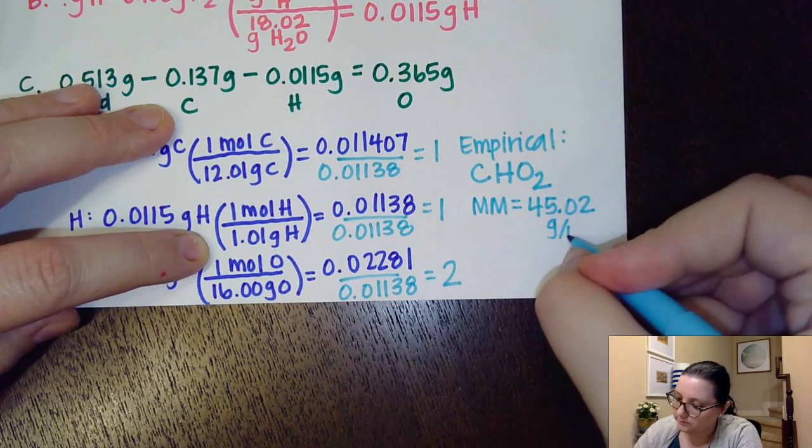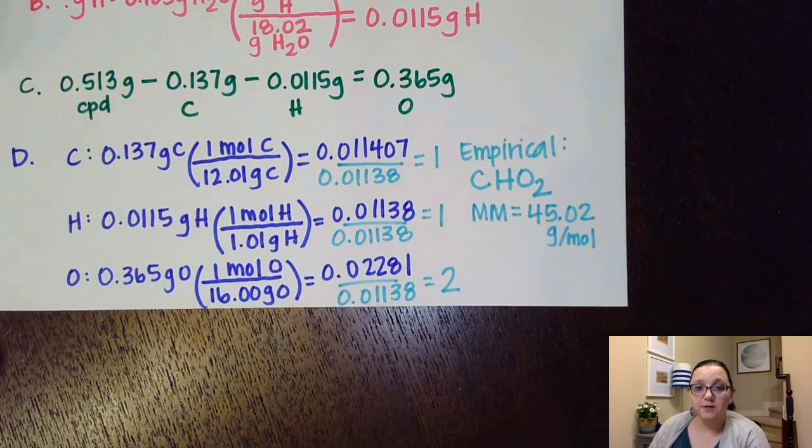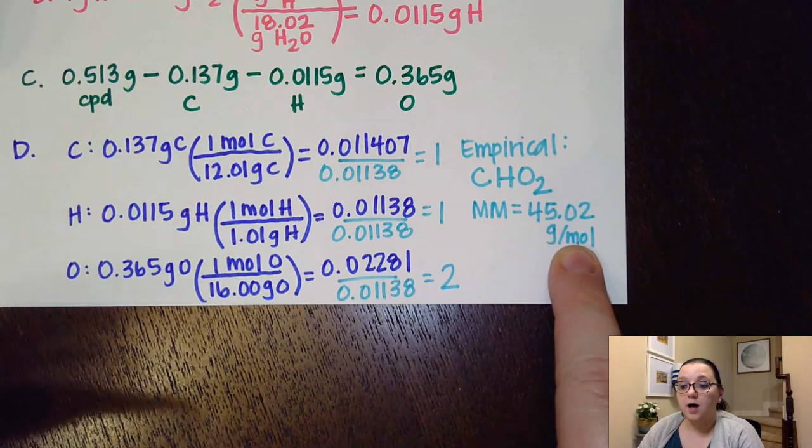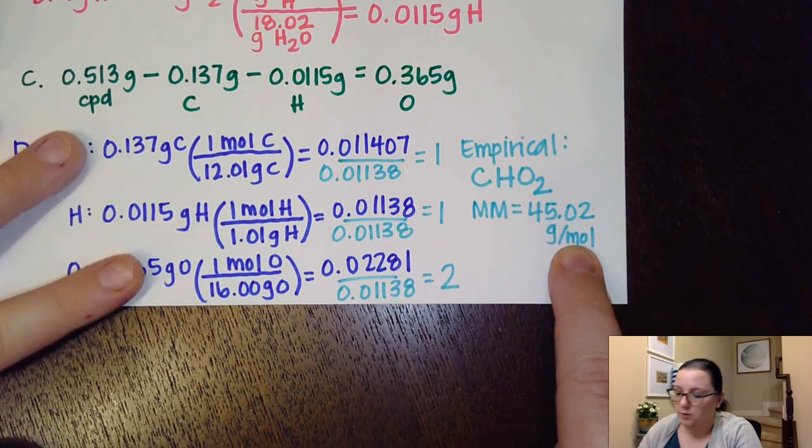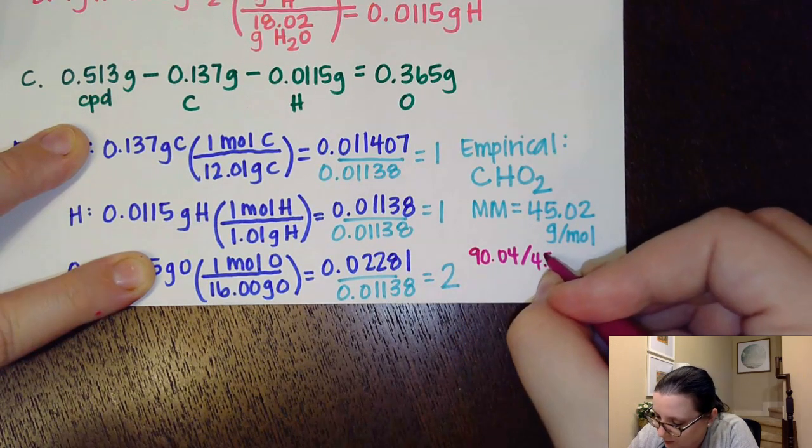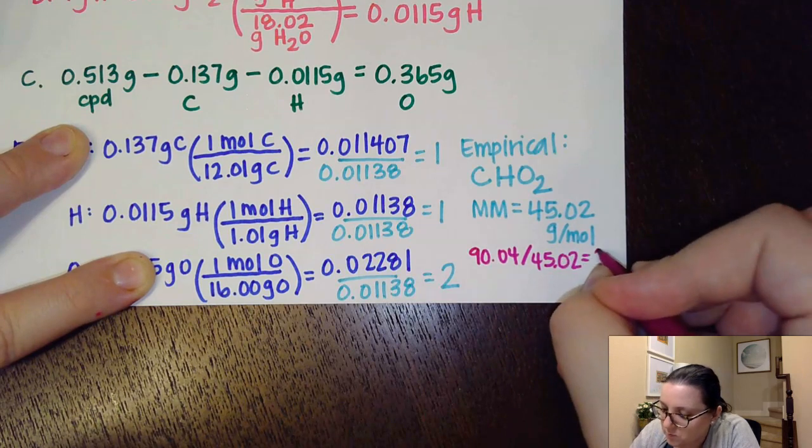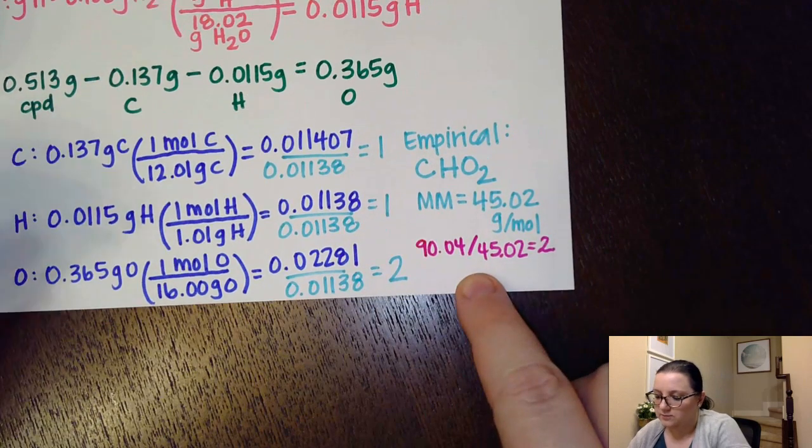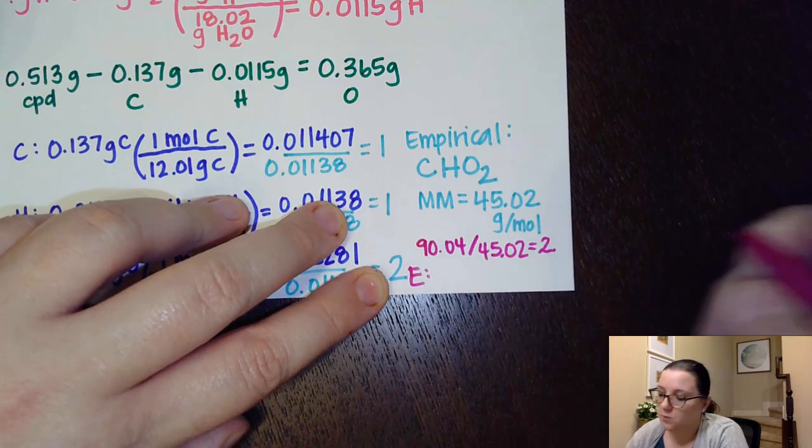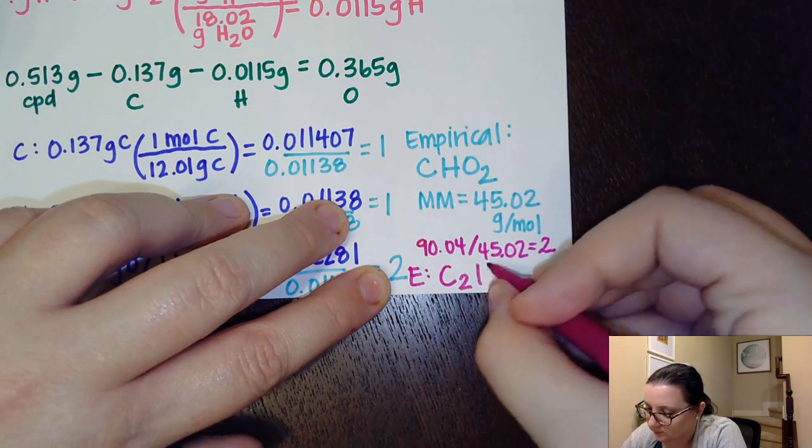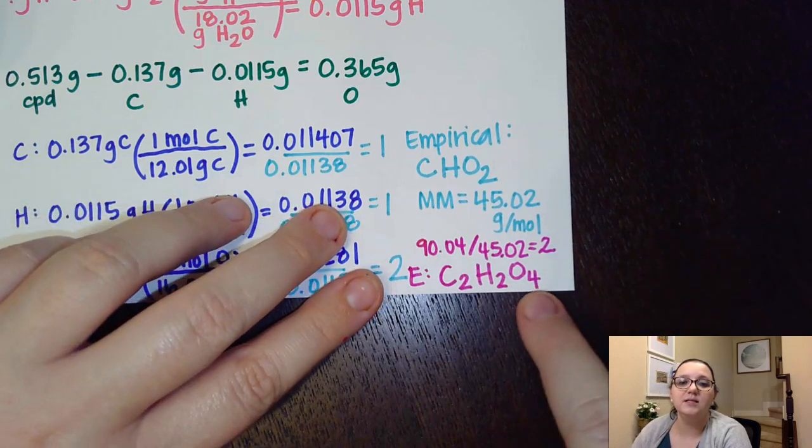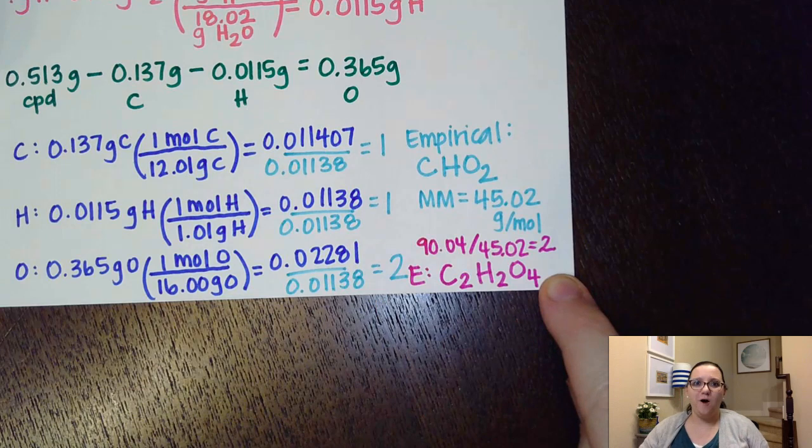So if I want to figure out what the molecular formula is, I would want to figure out how many times does this fit into the actual molar mass of 90.04. And I see 90.04 divided by 45.02. I think you see where this is going, gives us a multiplier of two. So what that means for part E, my molecular formula would end up being two carbons, two hydrogens, and two times two, four oxygens. So this is the actual formula for oxalic acid.